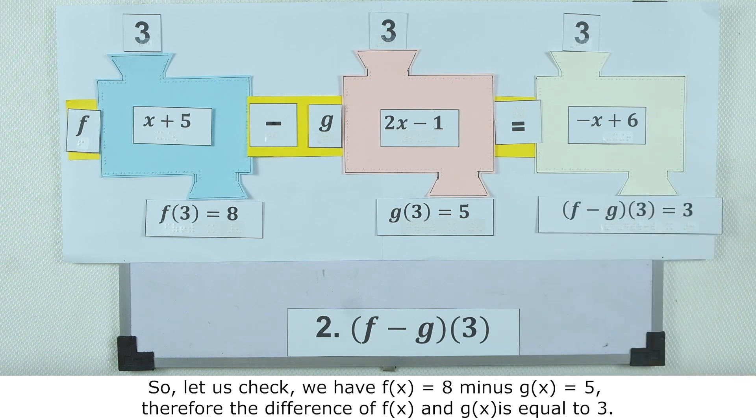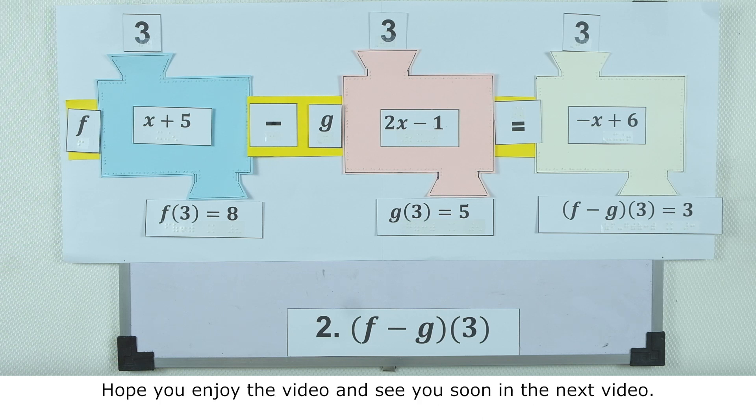So let us check. We have the f of x function, which equals 8, minus the g of x function, which equals 5. Therefore, the difference of f of x and g of x is equal to 3. Hope you enjoyed the video, and see you soon in the next video.